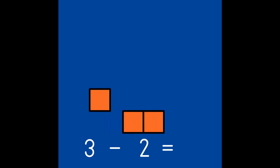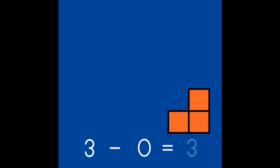0 and 3 are partners of 3. Let's practice taking one partner away and see how many are left. If we have 3 and we take 1 away, what partner is left? Did you say 2? Way to go! If we have 3 and we take 3 away, what partner is left? 0. 3 take away 2 leaves 1. 3 take away 0 leaves 3.